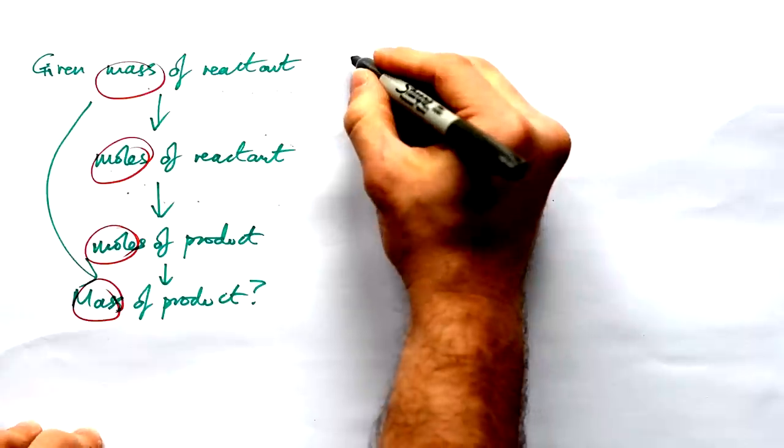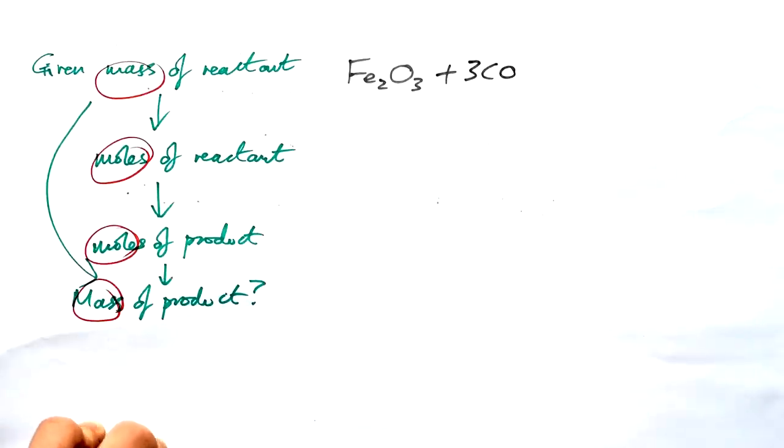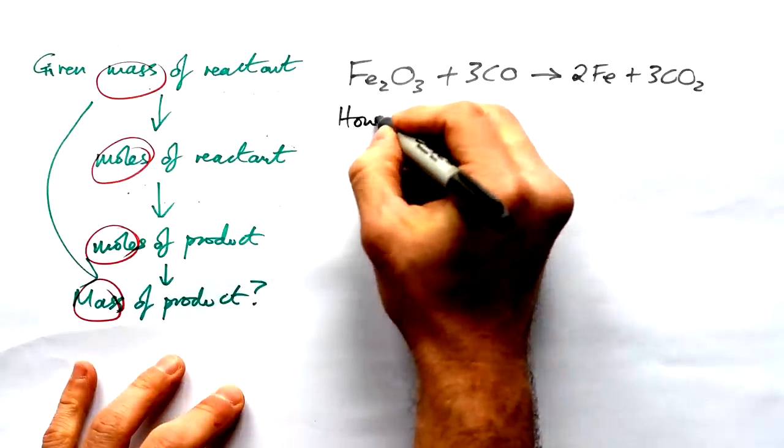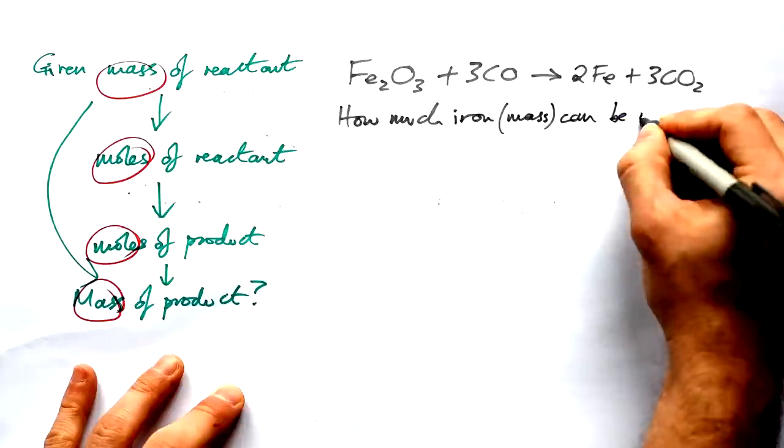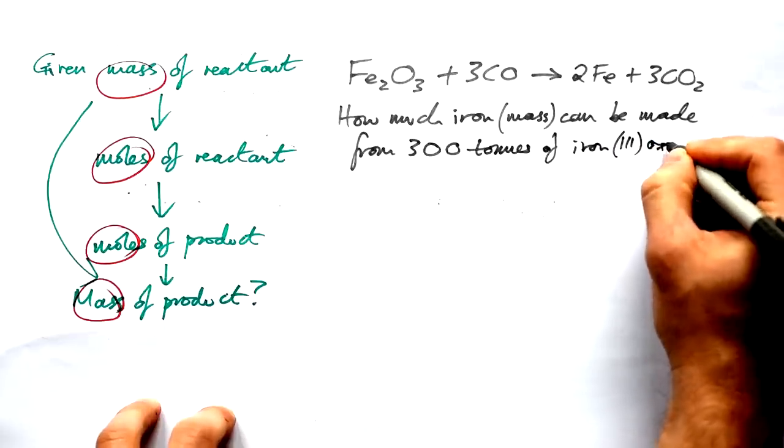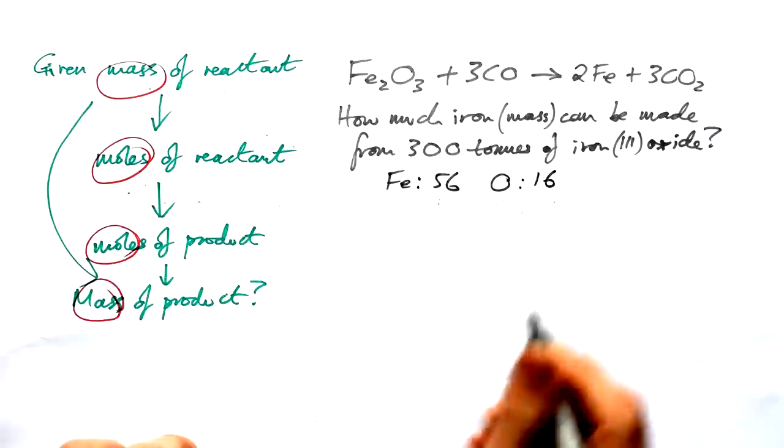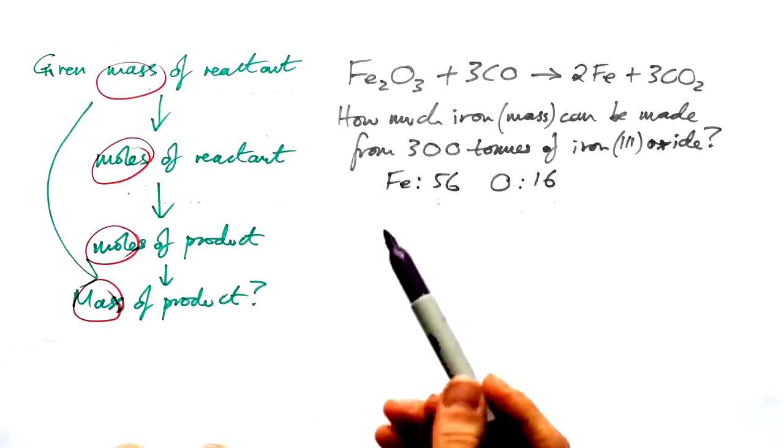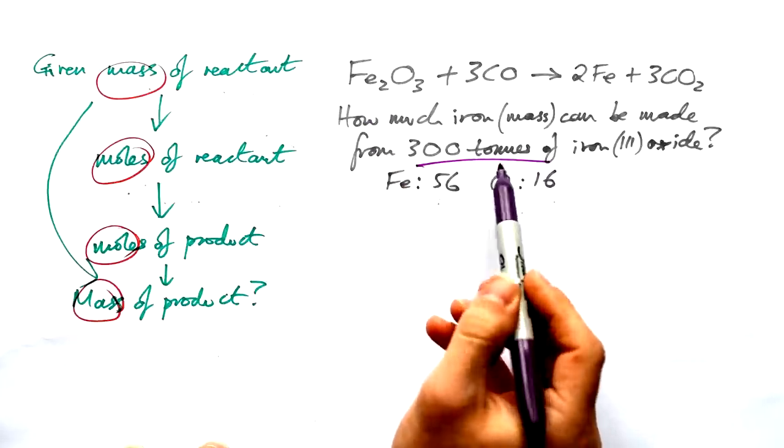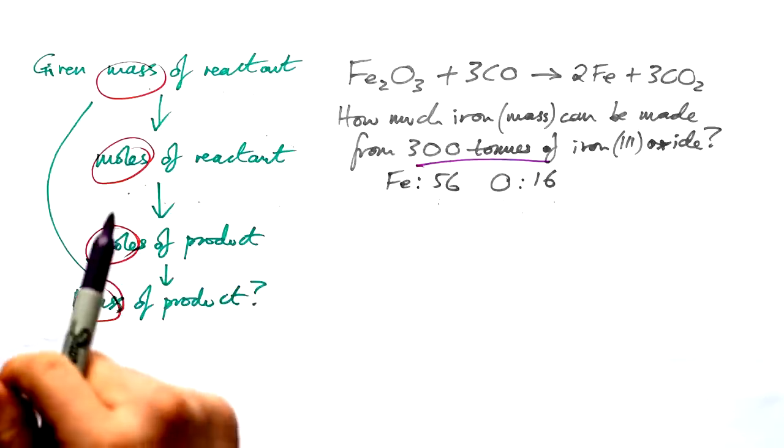So let's have a look at an example of a question. So we have this reaction going on here. Iron three oxide reacting with carbon monoxide and it's been balanced for us. So we have three CO and that makes two lots of iron plus three lots of CO2. And the question is then how much iron mass can be made from 300 tons of iron three oxide. And we've been given the relative atomic masses. Iron is 56, oxygen is 16. That's all we need to know. So we have the mass of the reactant. We know that we have 300 tons of iron three oxide going in. It's in tons, but actually it doesn't matter. Because if we have grams at the beginning, we have grams at the end. If we have tons at the beginning, we just end up with tons at the end. It's all relative.